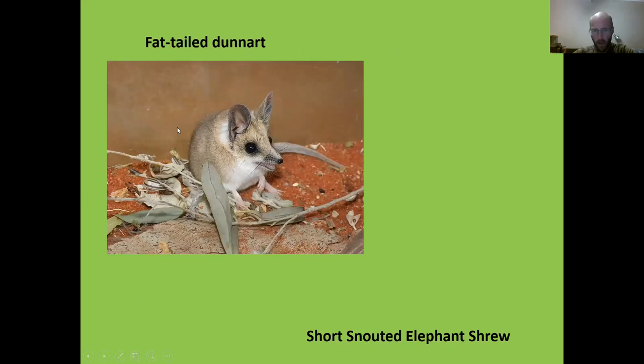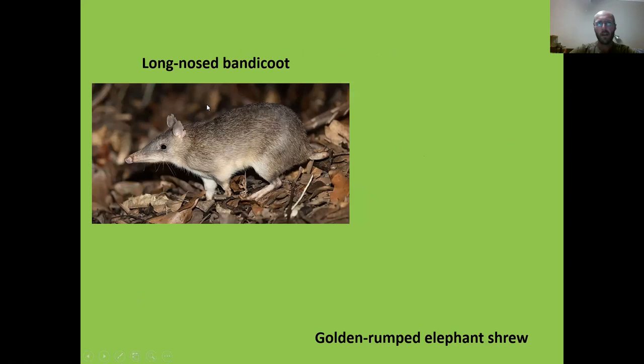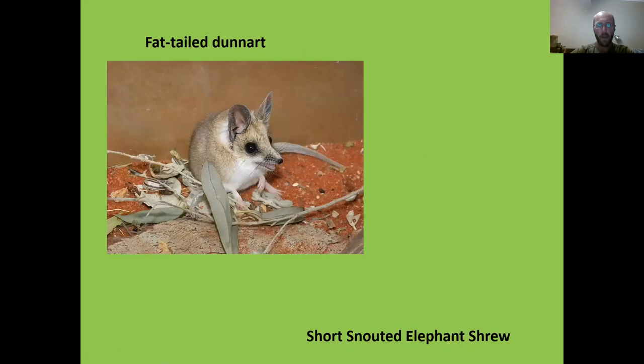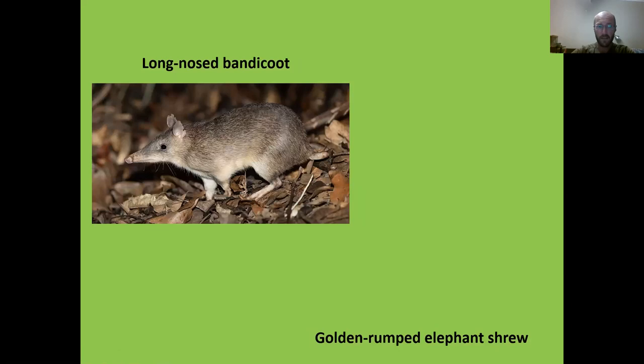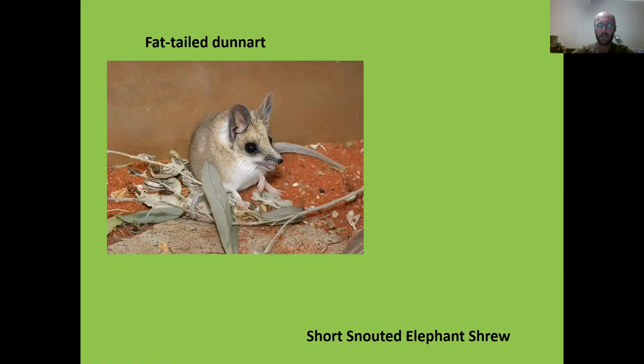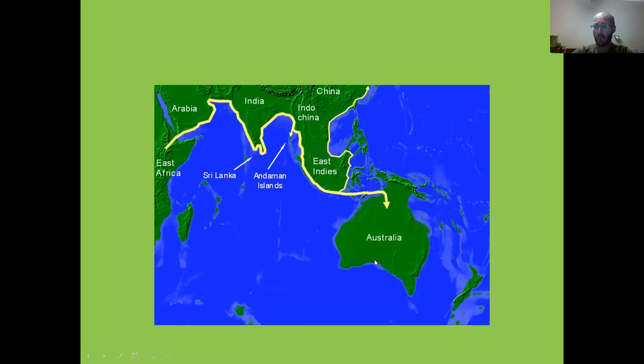Here we have a long-nosed bandicoot, which is a marsupial from Australia, and the golden-rumped elephant shrew from Africa — almost identical but completely unrelated. One is placental and the other is a marsupial. Similarly, the fantail bandicoot and the short-snouted elephant shrew are again almost identical but completely unrelated.